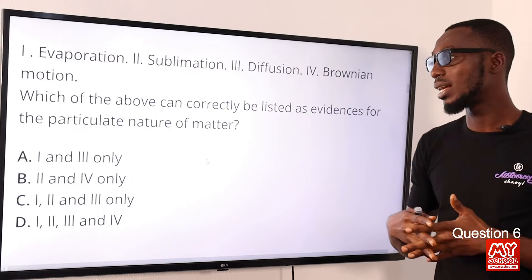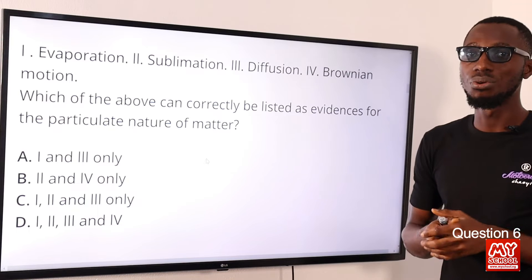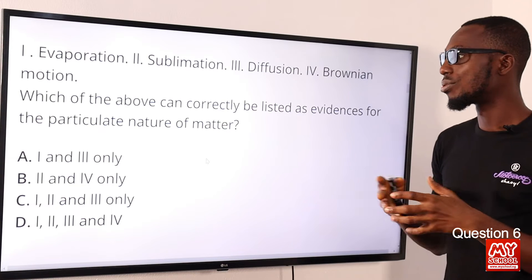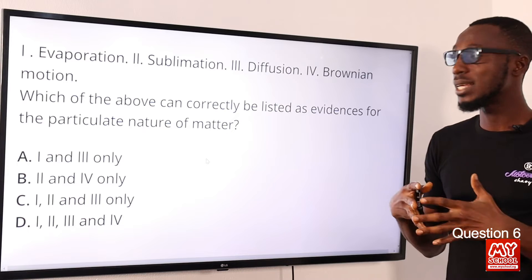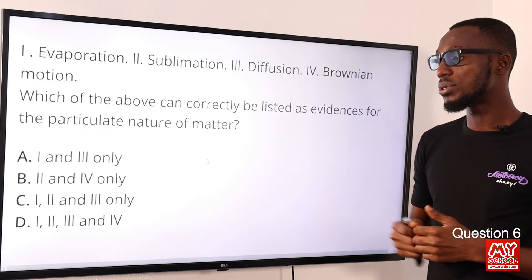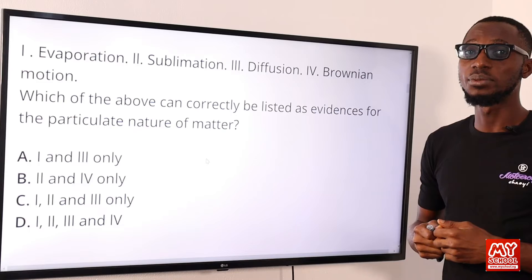But since we have a presentation in combination whereby three and four is made available in option D, we can go for option D because evaporation, sublimation are physical changes that matter undergoes. But if you want to really go very direct and strictly to what we have presented in our textbooks, we would have gone for diffusion and Brownian motion alone. We'll go for option D—option D is the most viable option.